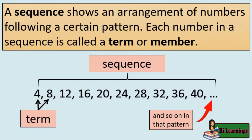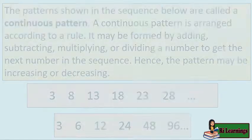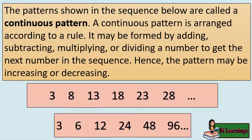A sequence shows an arrangement of numbers following a certain pattern. Each number in a sequence is called a term or member. The three dots at the end of a sequence means and so on. There are different types of sequence, and one of them is continuous pattern.